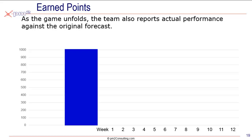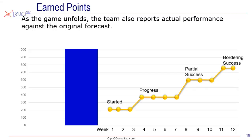Now let's look at how many points they've actually earned during this period. The target is 1,000. As we progress, we start the project, eventually achieve some progress, get some partial success, and in this case end the game at the level of bordering success. Week on week they've communicated how they've been progressing against the original goal. The original goal was 1,000, and they achieved bordering success, which turns out to be 800 points. On an ongoing basis, leadership can see the progress they're making.